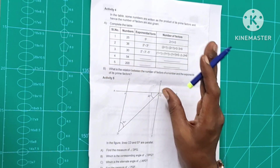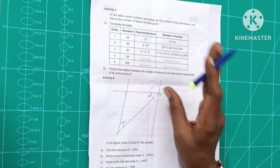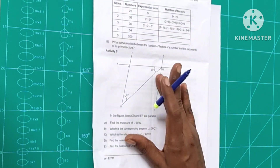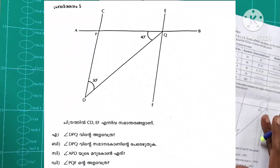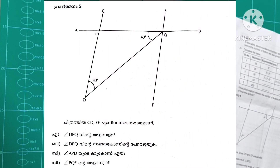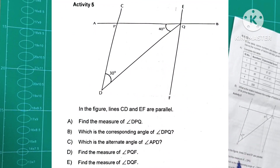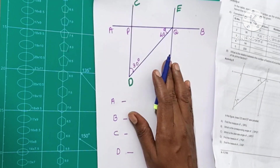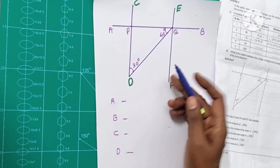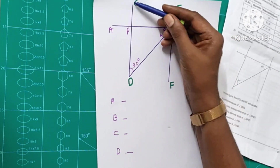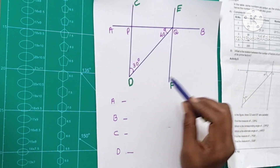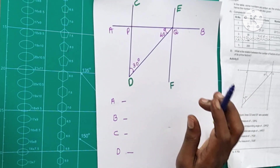We have a note here. What I want to say is: in this note, there are lines C, D and E, F which are parallel. It's a bit complicated, but let's look at the note.